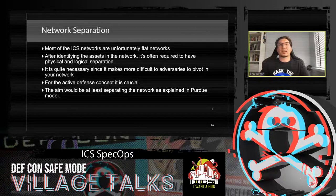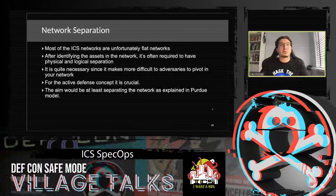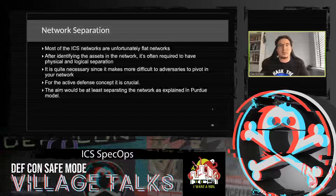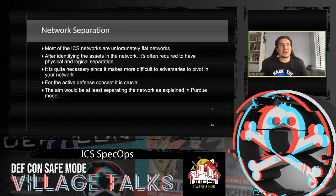Unfortunately, most ICS networks are flat networks, as you'll notice once you've done asset identification. After identifying assets, it is often required to have physical or logical separation — or both — since it makes it much more difficult for adversaries to pivot in your network. If it's a flat network, the game could be over in half an hour. For active defense, separating the network as explained in the Purdue model is a good reference to start with; then you can add micro-segmentation.